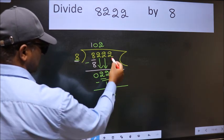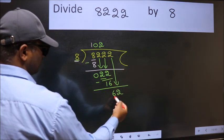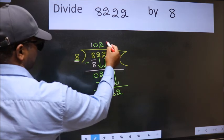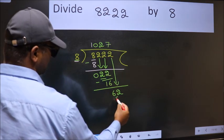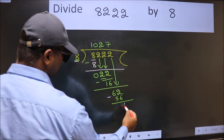After this, bring down the next number: 2. So we have 62. The number closest to 62 in the 8 table is 8 times 7, which is 56. Now we subtract and get 6.